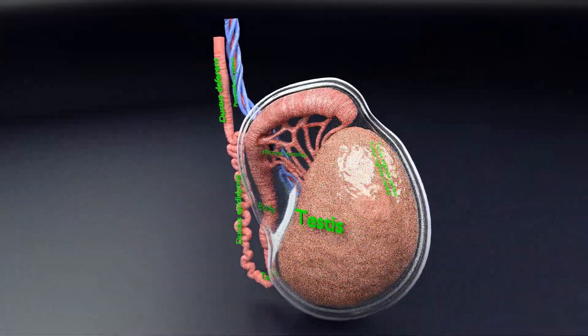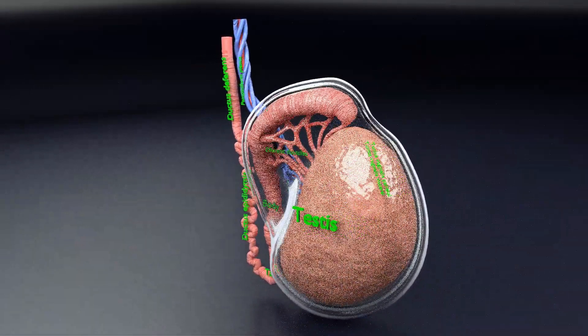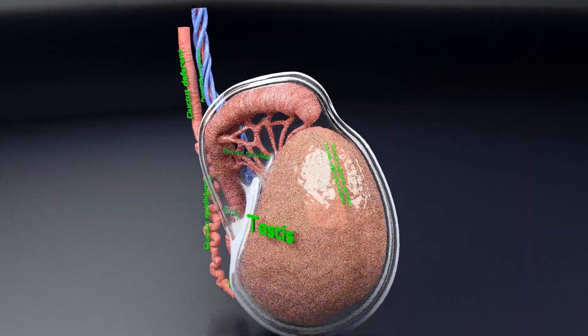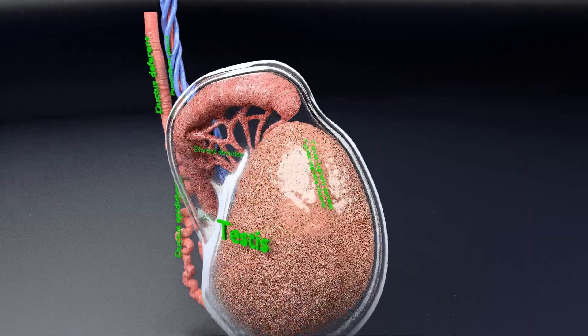The testes, also called the testicles, are two oval-shaped organs in the male reproductive system. They are contained in a sack of skin called the scrotum.